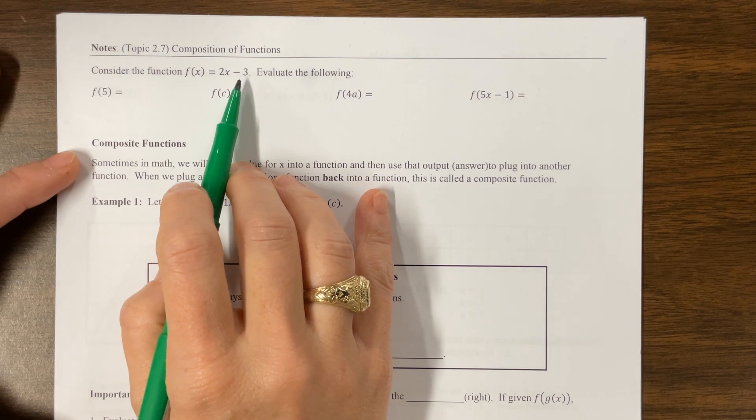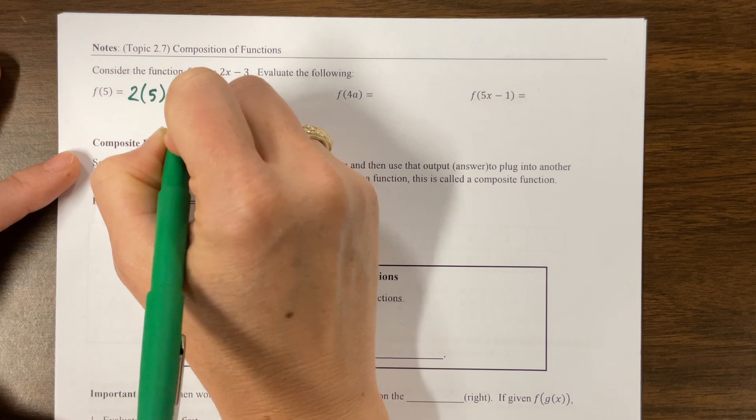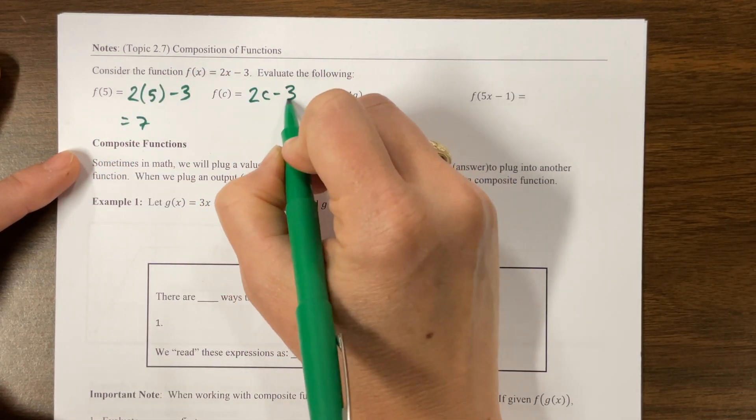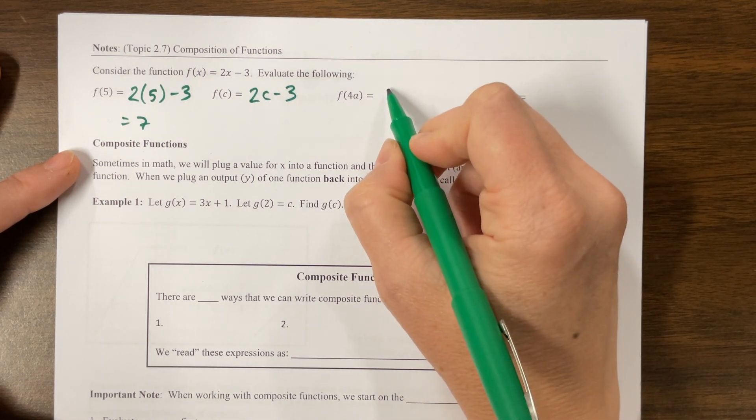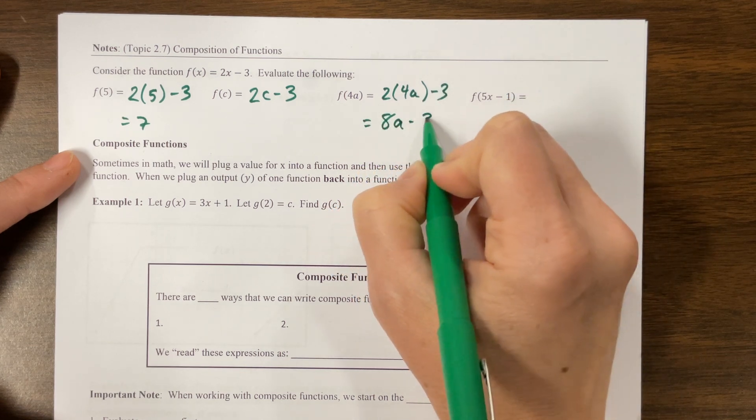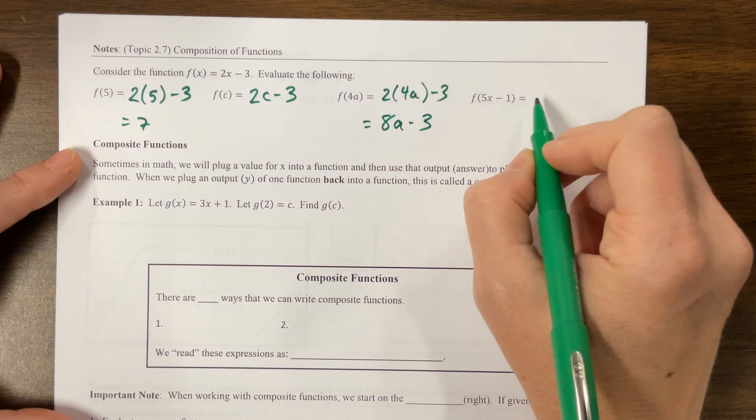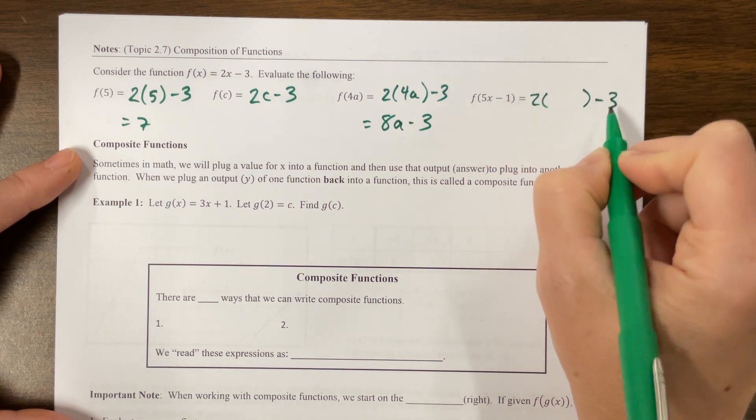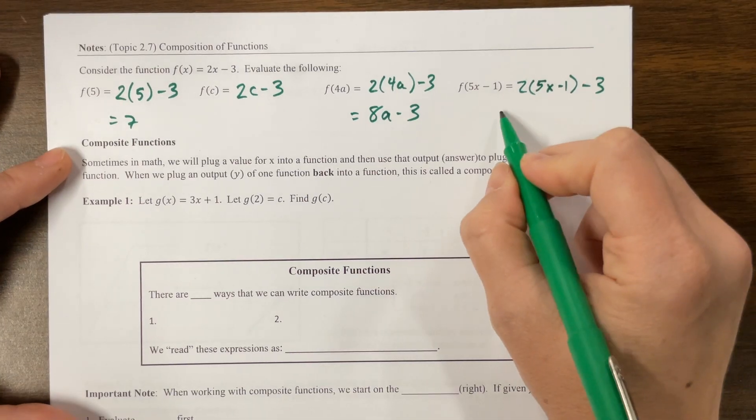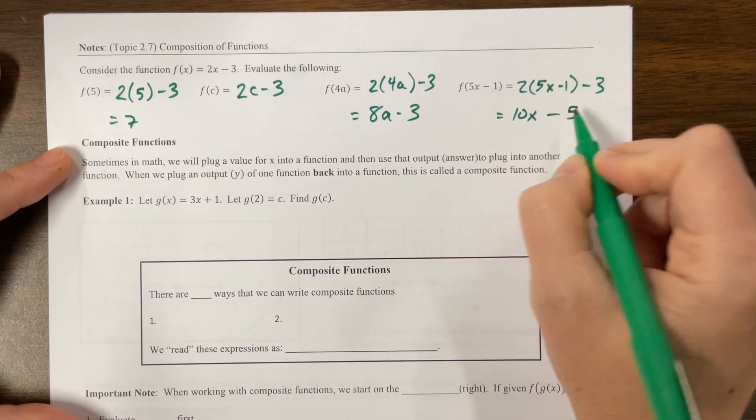Consider the function f(x) = 2x - 3. f(5), well we would just plug that in. 2 times 5 minus 3, that's 10 minus 3 is 7. f(c) means we have 2c - 3 and there's nothing we can do. f(4a) means we have 2 times 4a minus 3, which is equal to 8a - 3. There we go.